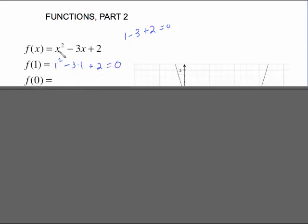f(0) is asking to do the same thing. Put 0 in for each of these. 0² is 0, minus 3(0) is 0, plus 2 just gives us 2. So that was evaluating a function.